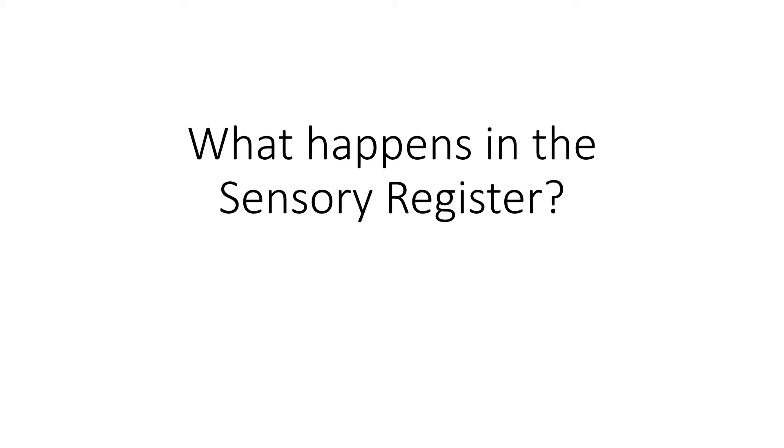In the last video, we introduced a simple four-component model of the human brain. The first component is the sensory register. In this short video, we describe the sensory register and what happens in the learner's brain when information enters the sensory register.